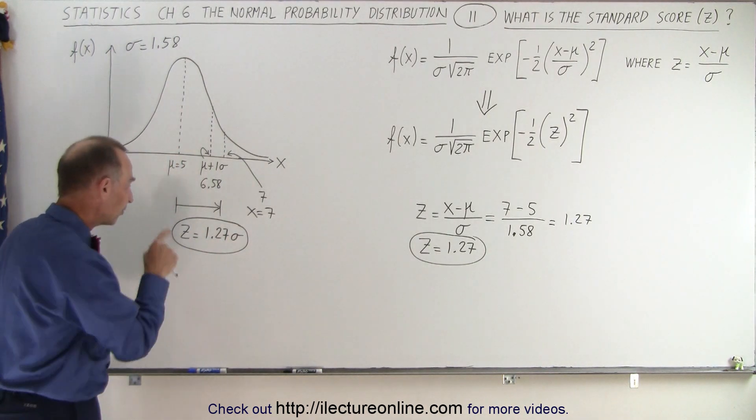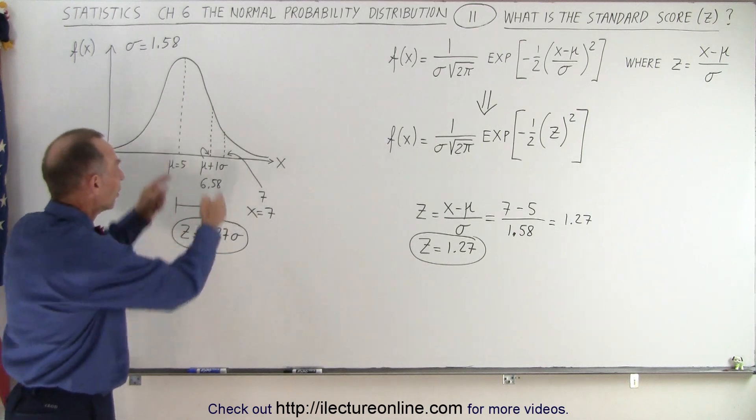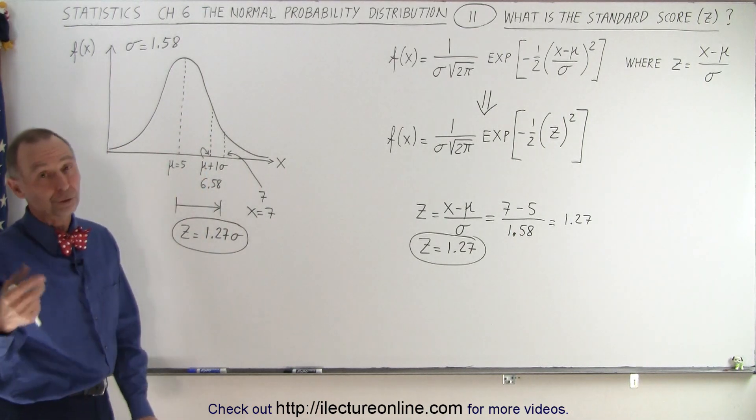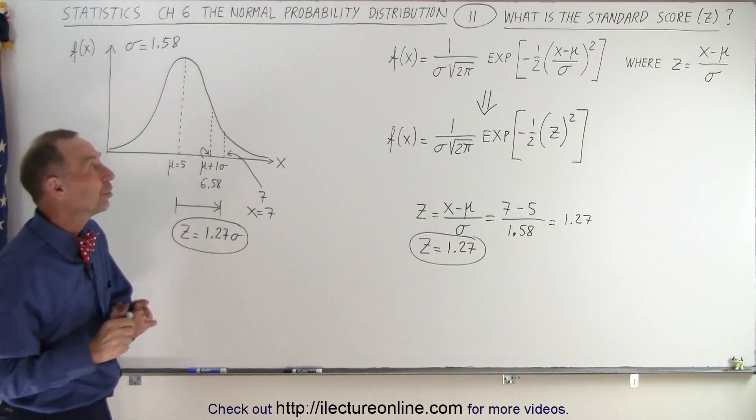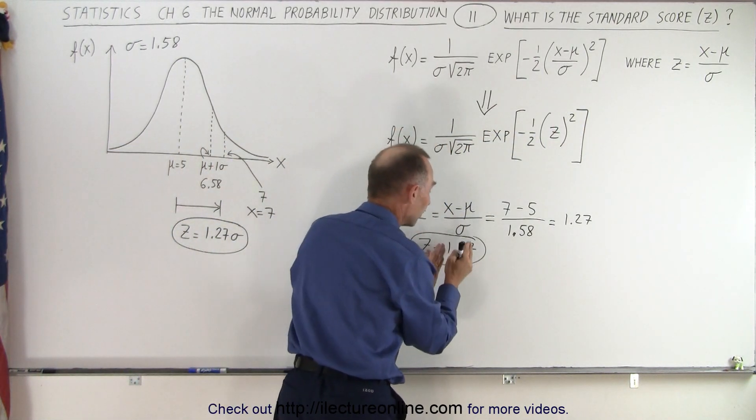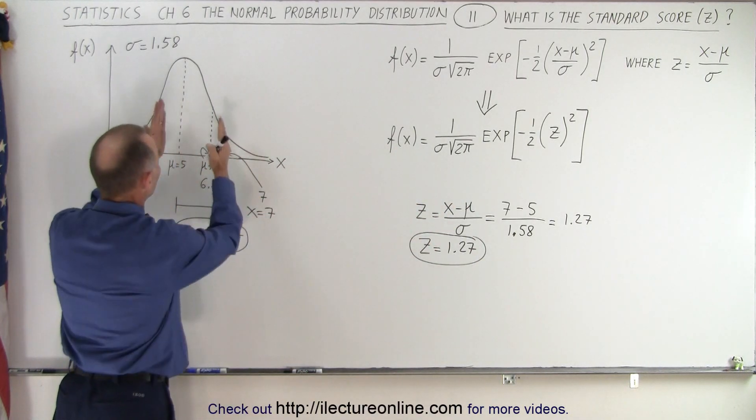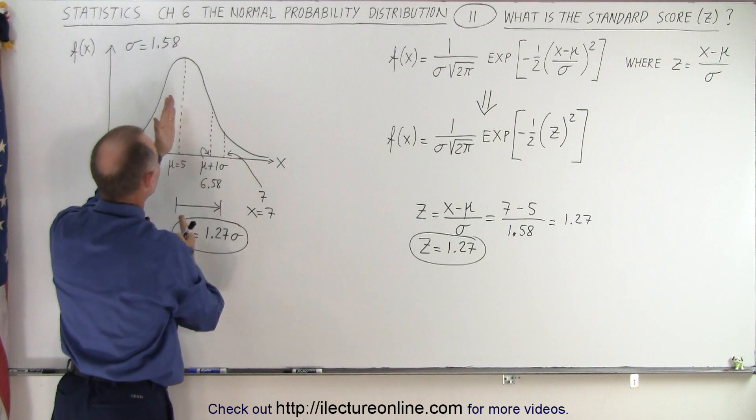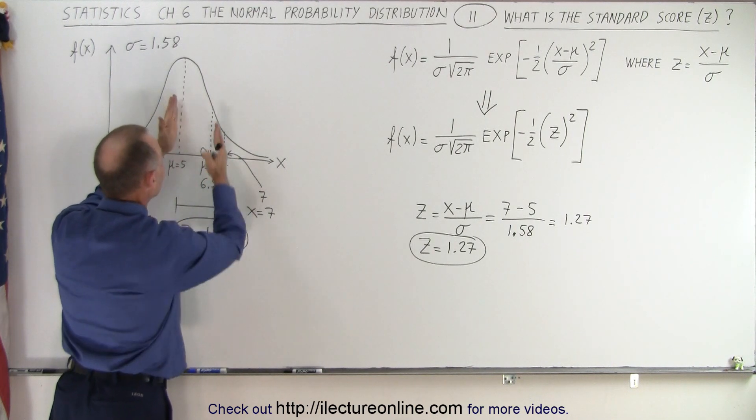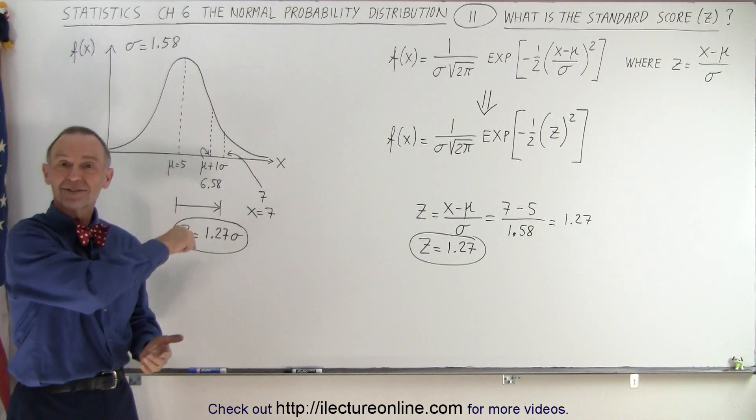Because once we know it in terms of sigmas, we can then go look up on a table to get the value for the area underneath the curve. And we'll show you, of course, how to do that. But at least at this point, you know how to calculate the standard score, which is simply the number of sigmas away from the mean for the point that we picked to see what the probability is that the results will be between the mean and the point that we picked. And that is how it's done. Do you remember this?